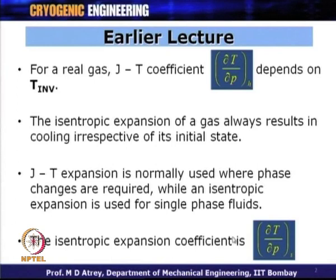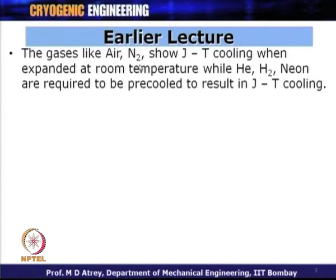The isentropic expansion coefficient is del T by del P at constant entropy, while for JT expansion it is del T by del P at constant H. We also studied that gases like air and nitrogen show JT cooling when expanded at room temperature, while other gases like helium, hydrogen, and neon require pre-cooling to result in JT cooling, owing to the fact that their inversion temperature is below ambient temperature.